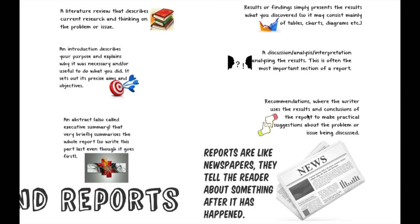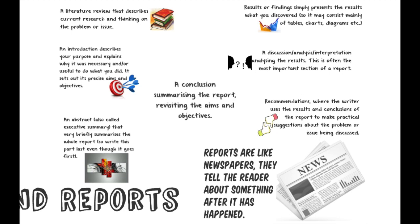Once you've done that, you make recommendations. These could be about the objective itself — for the asset-based community development example, perhaps recommending opening another playgroup in a particular part of the local community. Or they could be recommendations about future research because you haven't found out enough to answer the questions, or the questions you asked were the wrong ones. The recommendations follow on from the discussion, and then finally we move to a conclusion which summarises the report and revisits the aims and objectives, suggesting answers or responses to them.